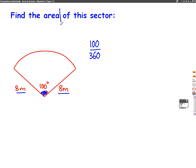And then because it's, again, an area question, we're going to use the formula pi r squared because that's the area of a circle. So it's 100 out of 360 times pi r squared. So let's put some numbers in. 100 out of 360 times pi, which is 3.14, times the radius, which we've said is 8 meters squared.